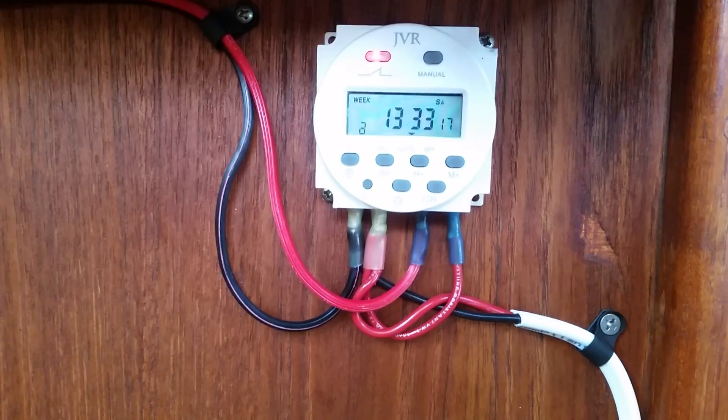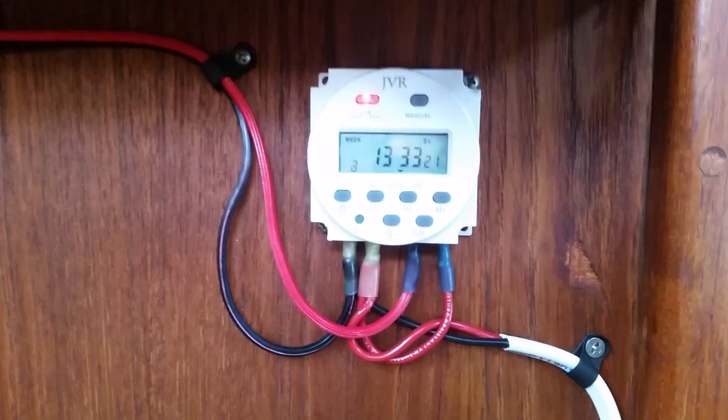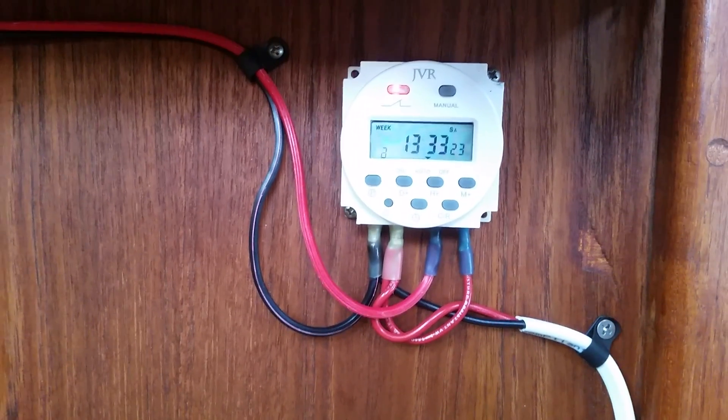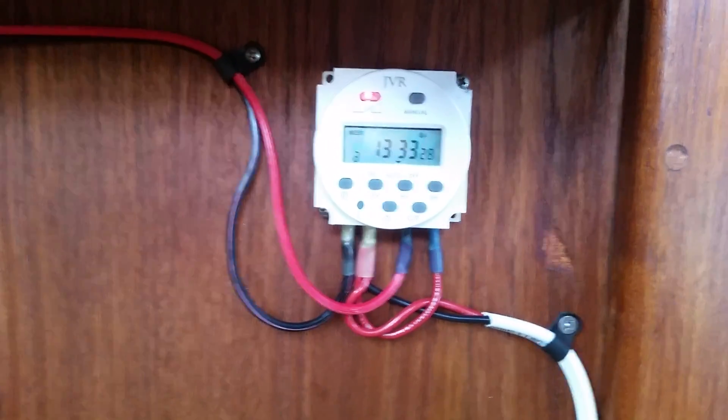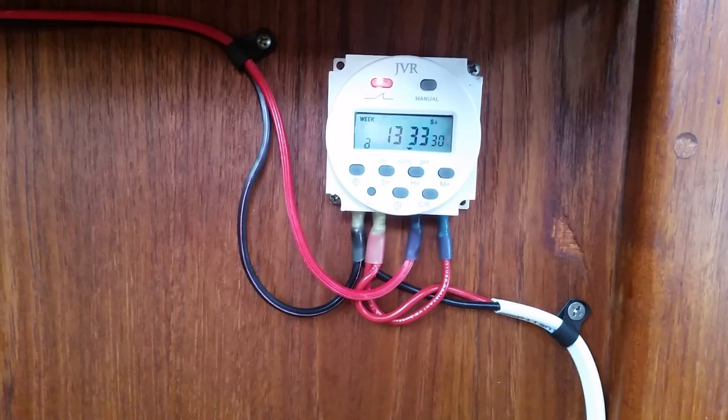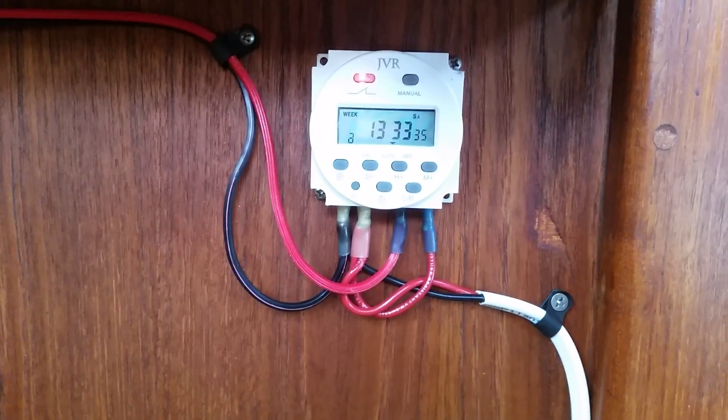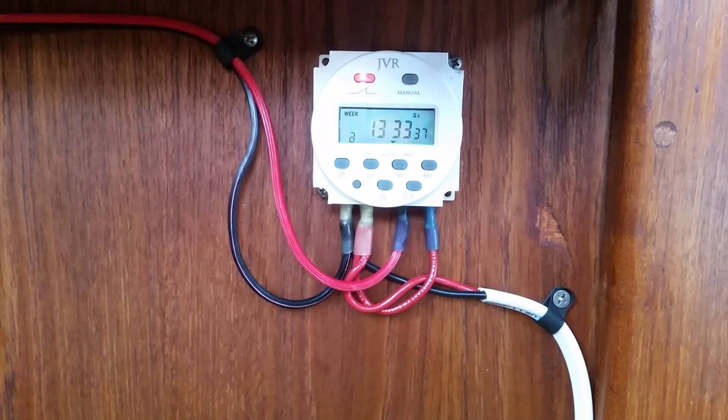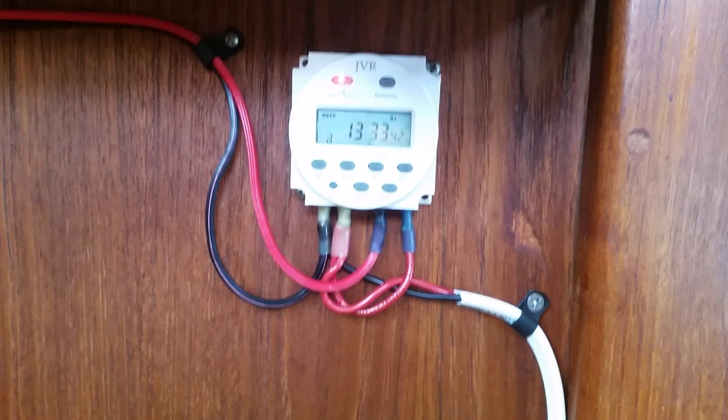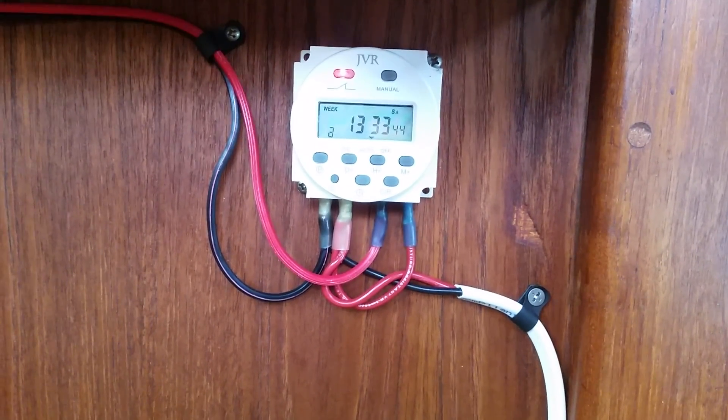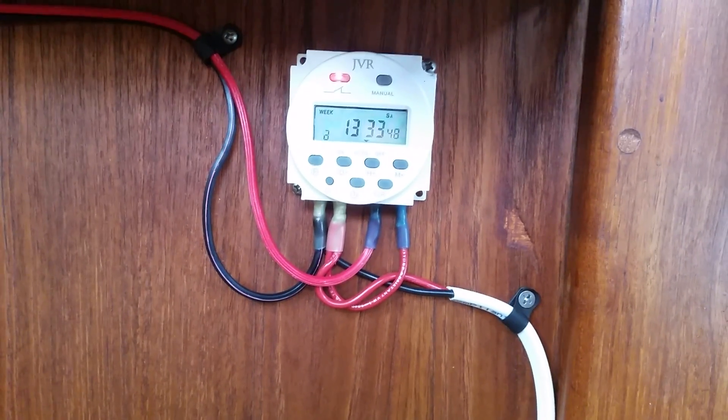I also have it set up with 16 selections in the time choices. Selection one, I have it come on at 6 a.m., run for 40 minutes, then go off for 20. It comes on at 7 a.m. for 40 minutes, comes on at 8 a.m., runs for 40 minutes, goes off, comes on at 9 a.m.